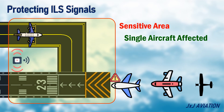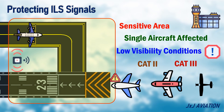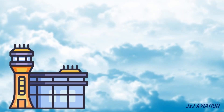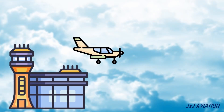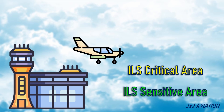The sensitive area would be enforced by the authorities only during low visibility conditions, Cat 2 and Cat 3. Both the ILS critical and sensitive areas have to be marked in an airport which has ILS operations. These areas ensure uninterrupted ILS signal transmission to the aircraft for a safe approach and landing.